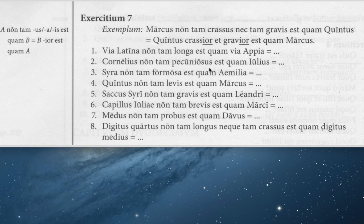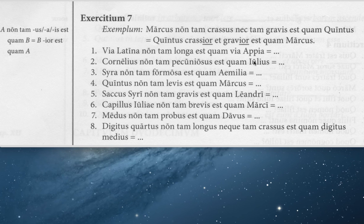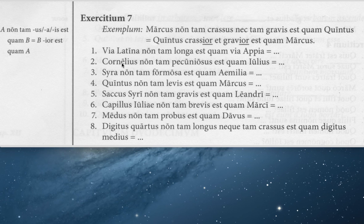Cornelius non tam pecuniosus — if you remember pecuniosus from the chapter on Albinus and the shop. Cornelius non tam pecuniosus est quam Iulius. Cornelius is not as rich as Julius. Therefore, Julius is richer: Iulius pecuniosior est quam Cornelius.